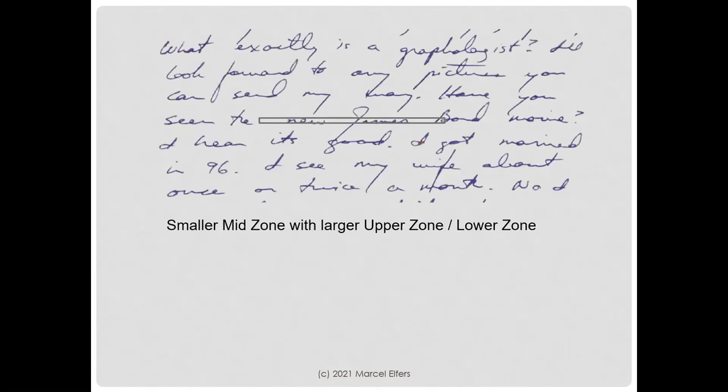In a previous video, we looked at Richard Ramirez's handwriting, and we realized that a smaller mid-zone with a larger upper and lower zone has the potential for limited regulation of our instinctual drives.